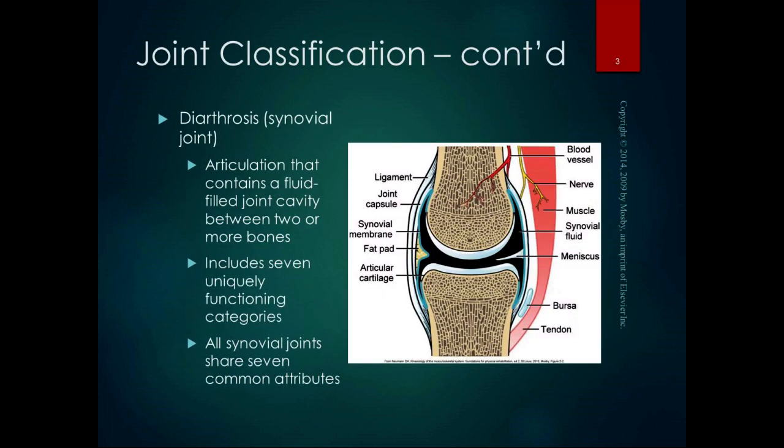A diarthrosis is another name for a synovial joint, and most of the joints in our body that provide a lot of movement are synovial joints. A synovial joint or diarthrosis is an articulation that contains a fluid-filled joint cavity between two or more bones. There are seven uniquely functioning categories, and all synovial joints share seven common attributes. Conveniently, there are seven types and seven common attributes, which makes it easy to remember.